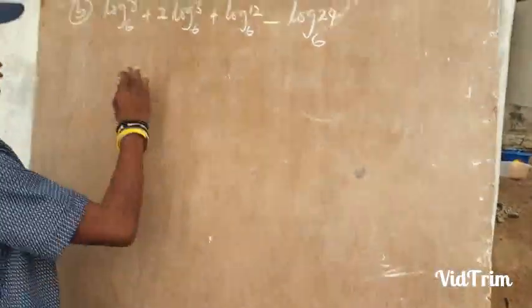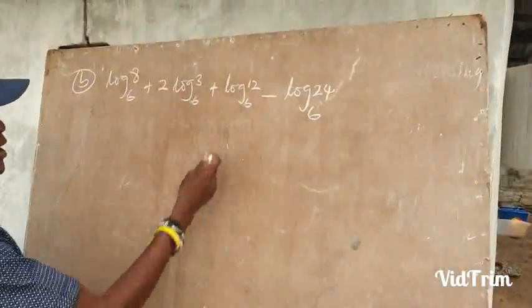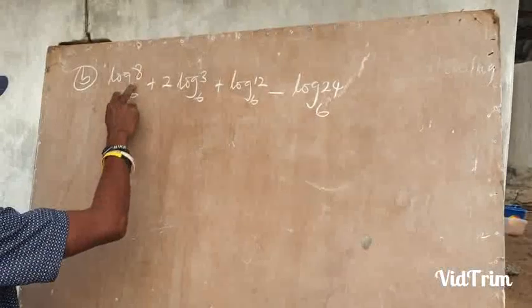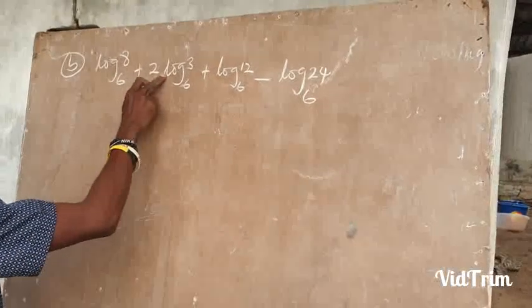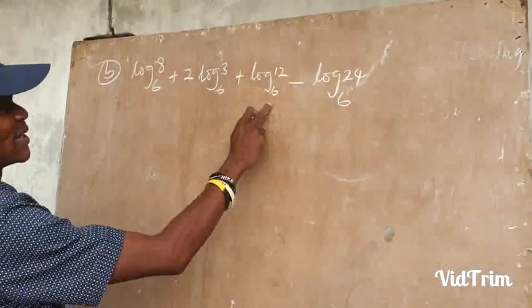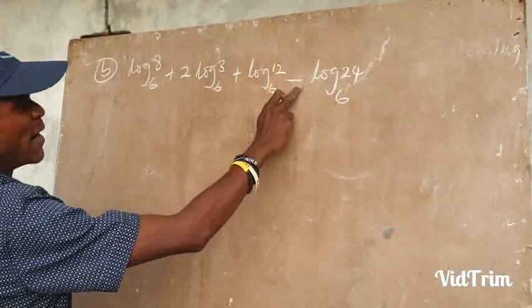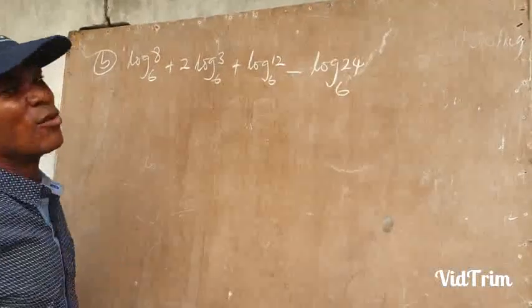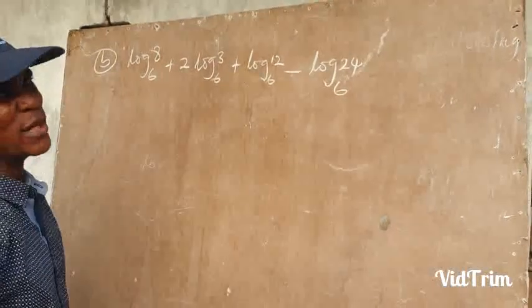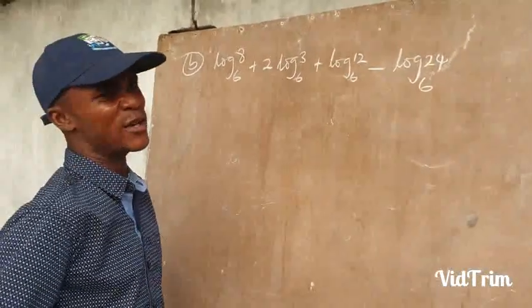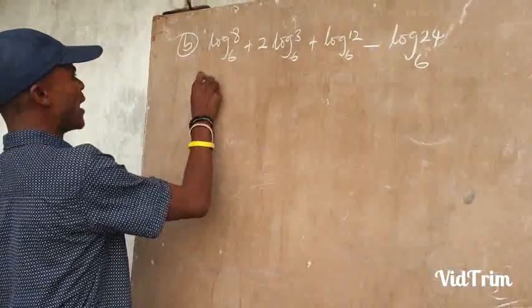The second past question says: log 8 base 6 plus 2 log 3 base 6 plus log 12 base 6 minus log 24 base 6. We proceed with the theorems — all nine theorems, we apply them.